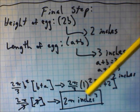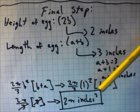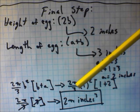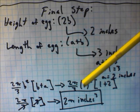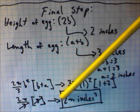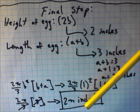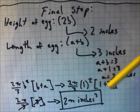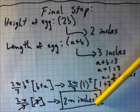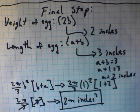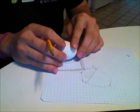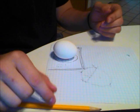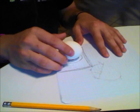Substituting b = 1 inch and a = 2 inches into the formula gives us a total volume of 2π cubic inches for an egg with a length of 3 inches and a maximum width of 2 inches.